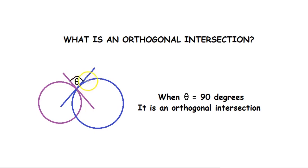So at a certain position of these two circles, the angle theta will be equal to 90 degrees. So when theta equals 90 degrees, it is called an orthogonal intersection.